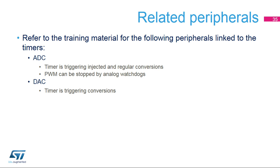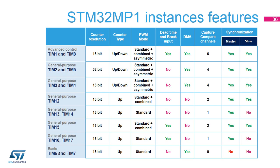It serves as a trigger source for the ADC and the DAC converter. This slide lists the timer instances present in STM32MP1 microcontrollers. Timers 1 and 8 are full featured timers, motor control capable, including all PWM options and six compare channels for being able to simultaneously generate three-phase PWM signals and have two independent ADC triggers. Timers 2, 3, 4, and 5 are general-purpose timers, including all PWM modes, up-down counting capability, and four channels.